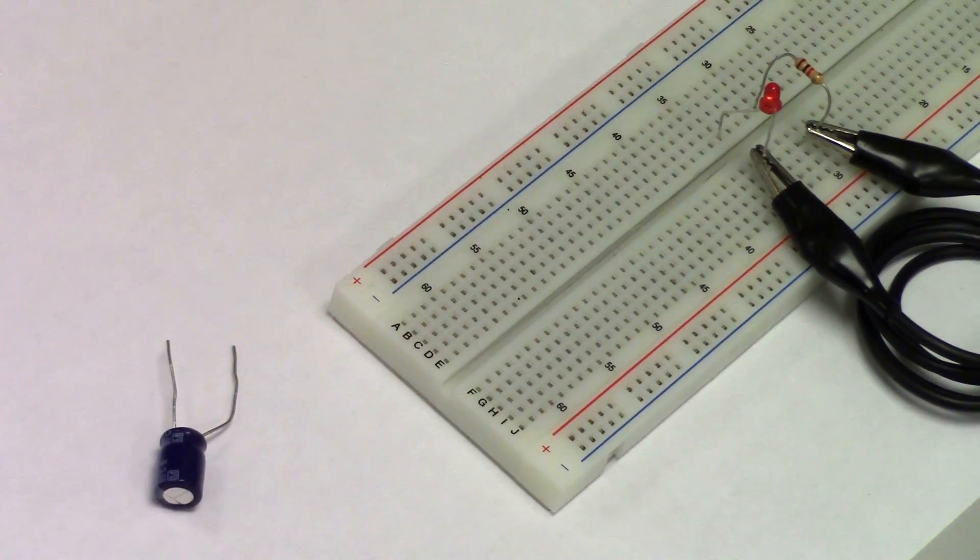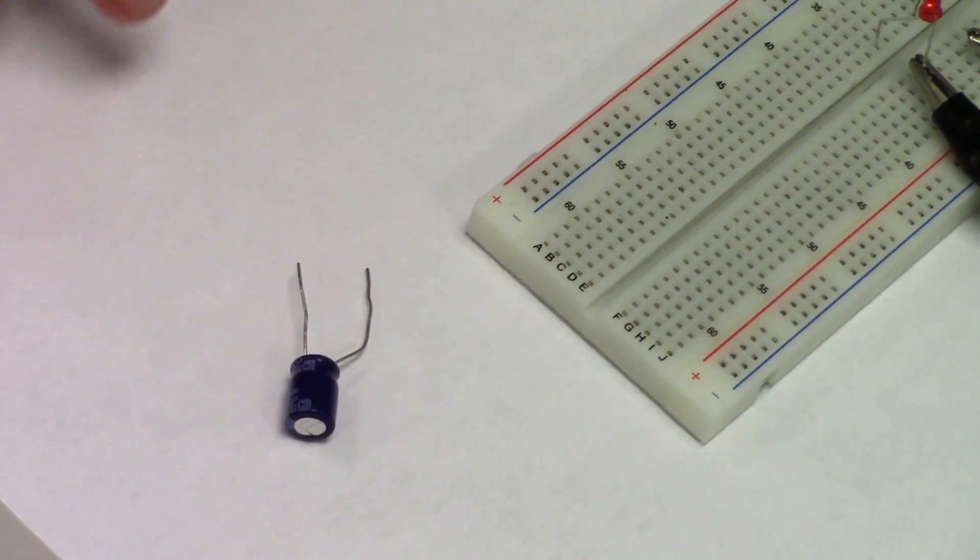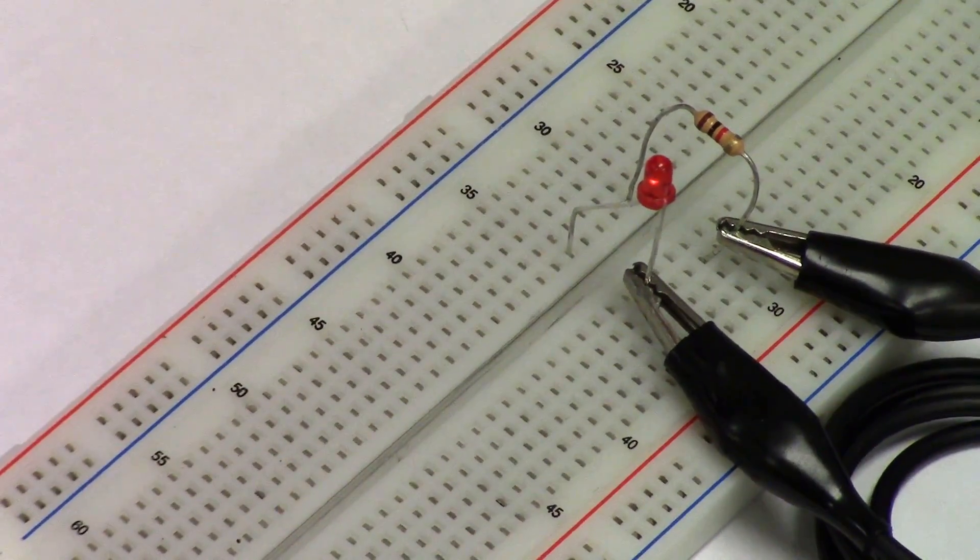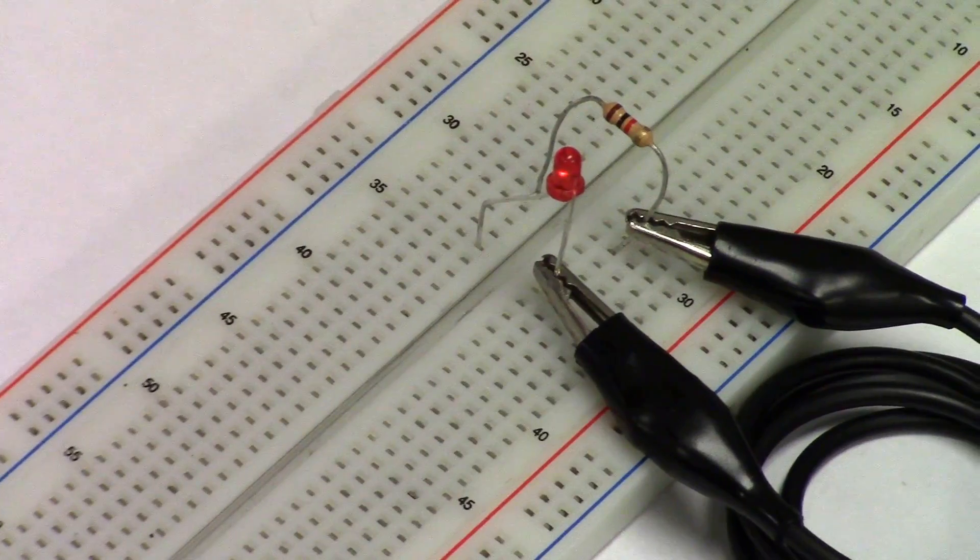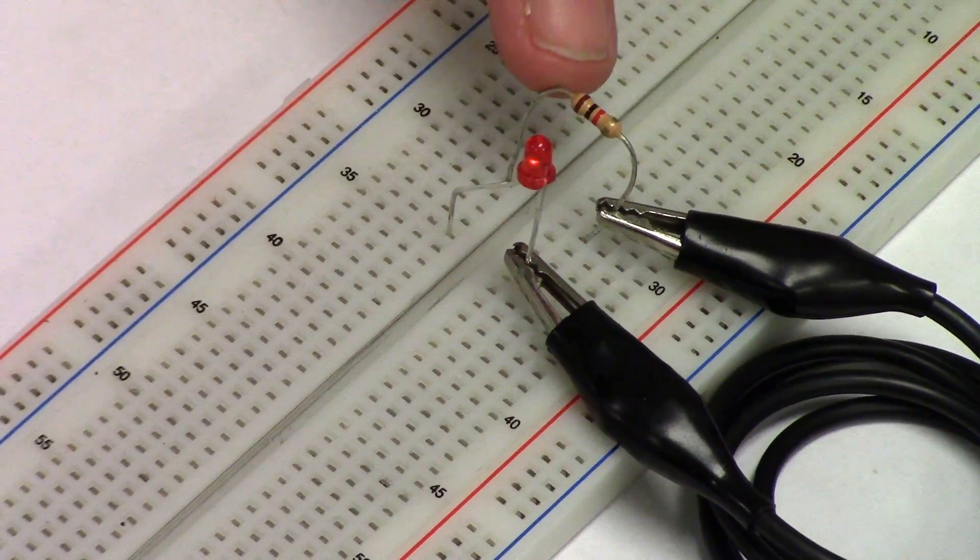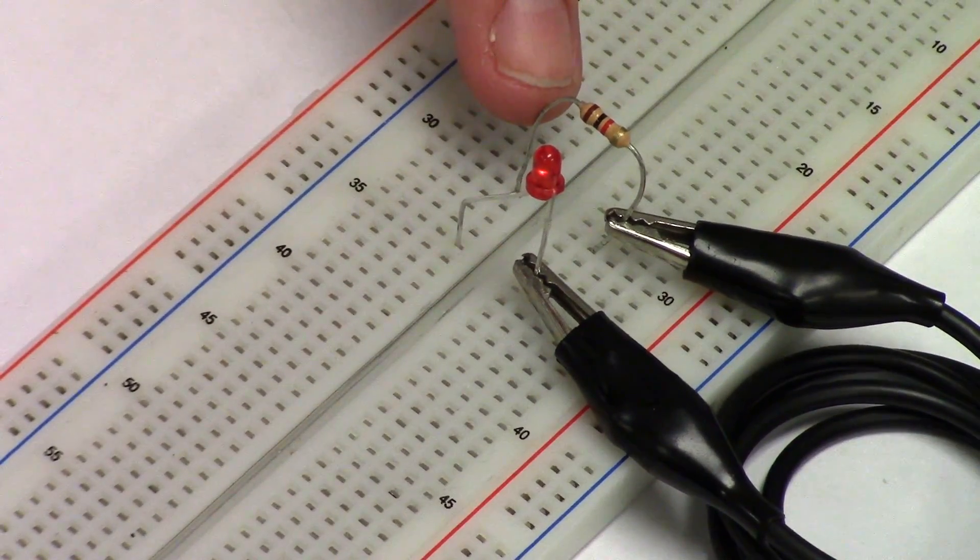Here, we're going to show you how a capacitor can be charged and then used to light an LED. First, we're going to check that the LED works by connecting it to a power source through a resistor. The resistor slows down the flow of charge so the LED doesn't burn out.